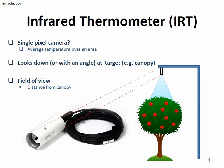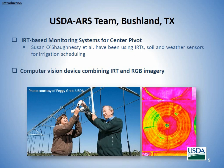This is one of the commercially available IRTs from Apogee. A USDA team from Bushland, Texas — specifically Dr. Susan Shenese and her colleagues — have been using IRTs and solar and wind-weather sensors for irrigation scheduling for a very long time. Recently, they have also combined IRTs with RGB imagery and developed a computer vision system for a similar application.